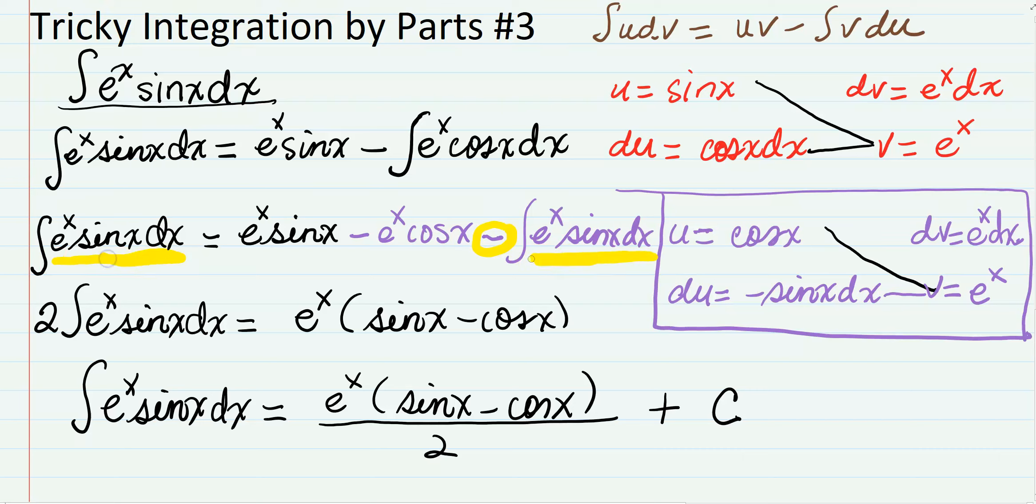So we get to move it or add to both sides. We have 2 e to the x sin(x) on the left hand side, and then we divide by 2. And that is why this one is kind of tricky, and you should think about how the problem is to start with.